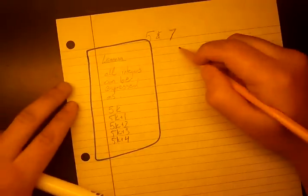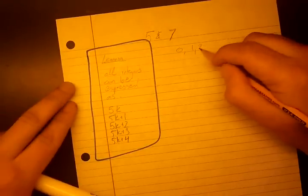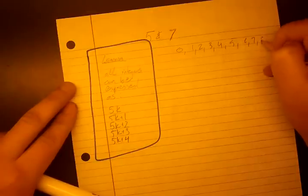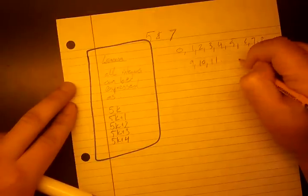And we can see how that's possible, because let's just list out some of the beginning integers. So we have 0, I'm going to start from 0, 1, 2, 3, 4, 5, 6, 7, 8, 9, 10, 11, dot dot dot.